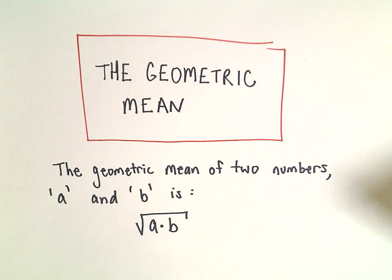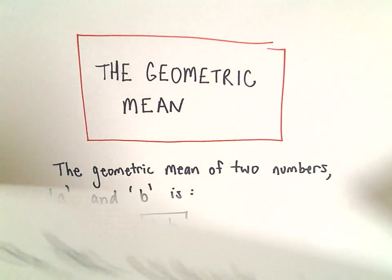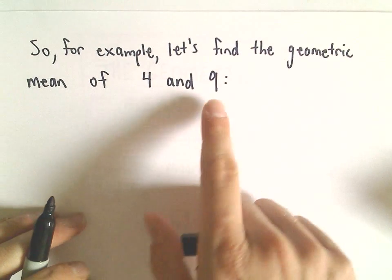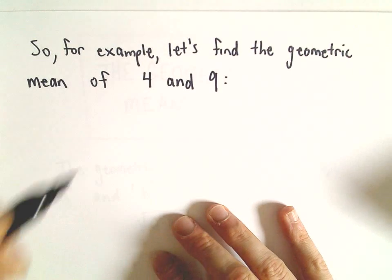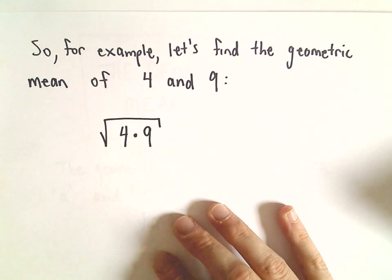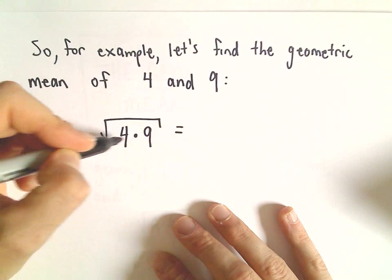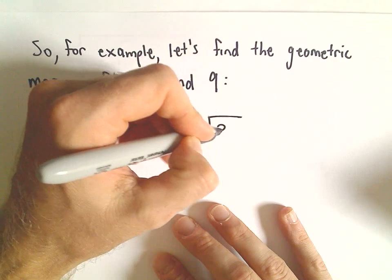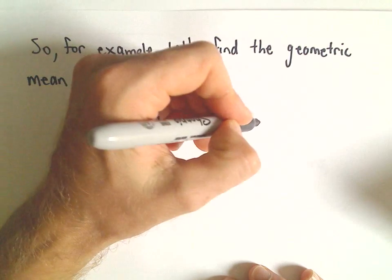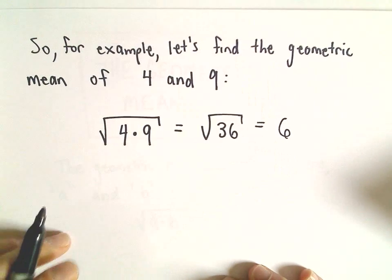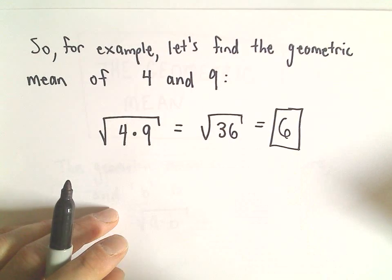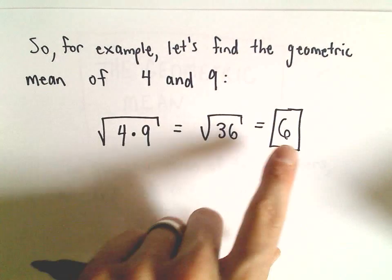I think that's the one most of us are more familiar with. So let's look at a simple example. Let's find the geometric mean of 4 and 9. What we'll do is multiply those two numbers together and then take the square root. So 4 times 9, that's 36. We take the square root of 36, which equals 6. So the geometric mean of 4 and 9 is 6.